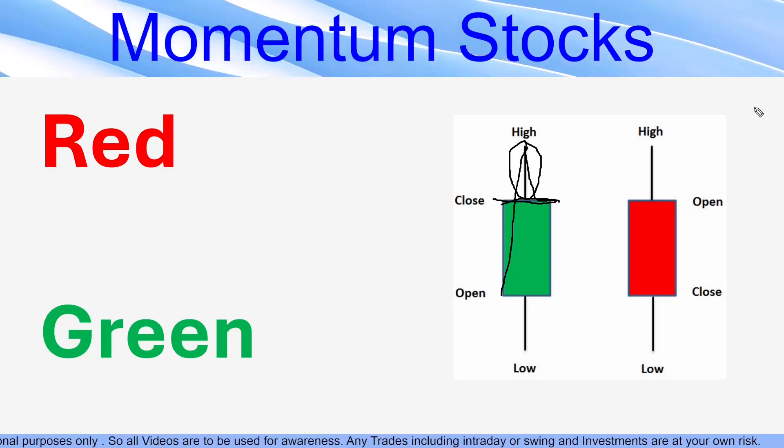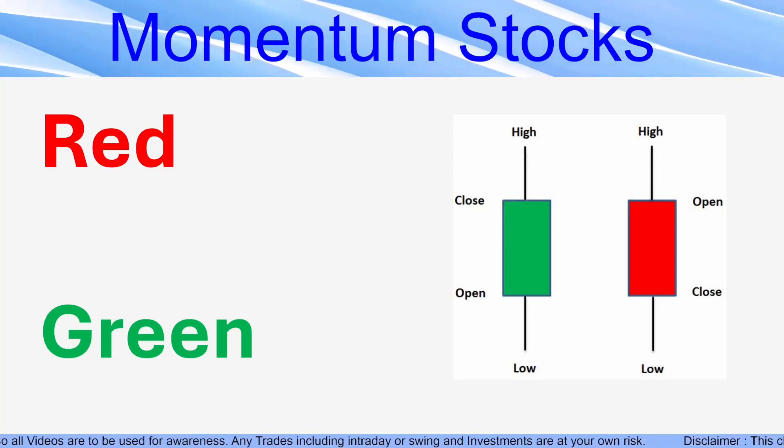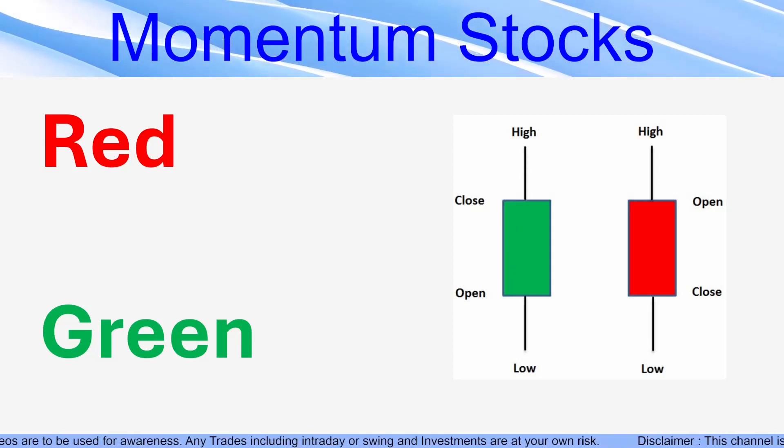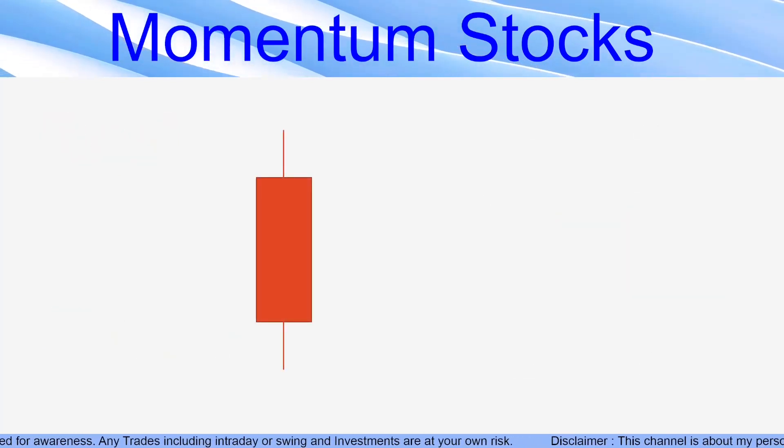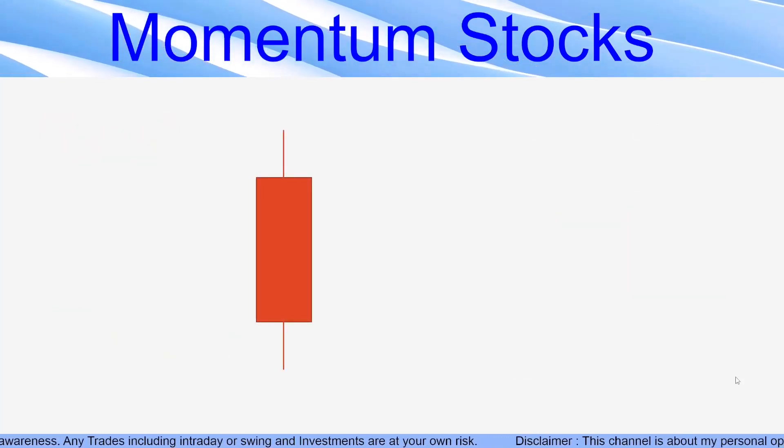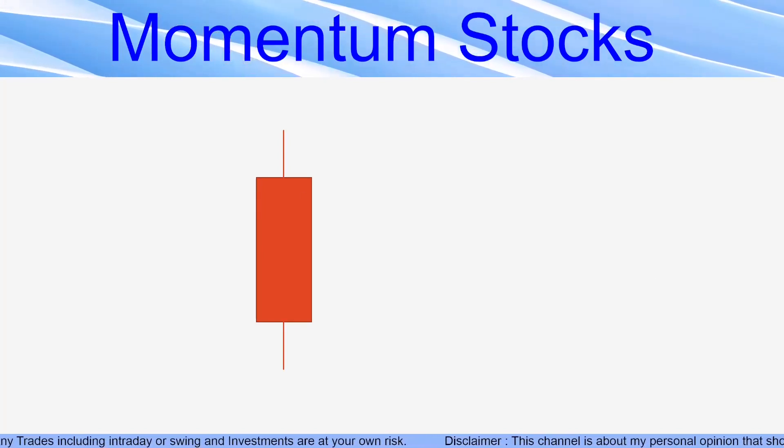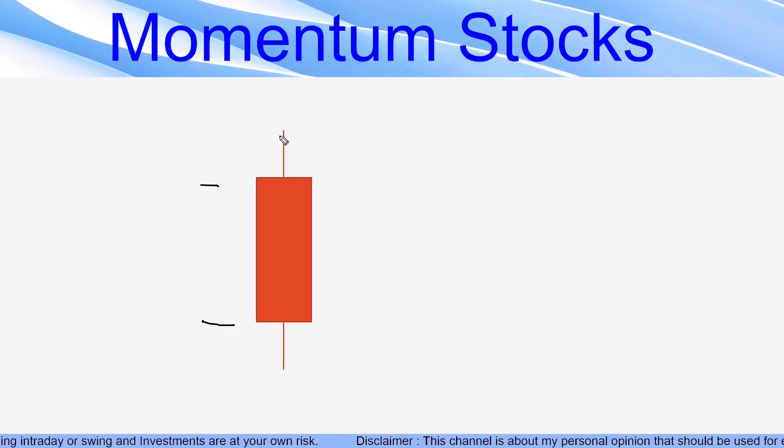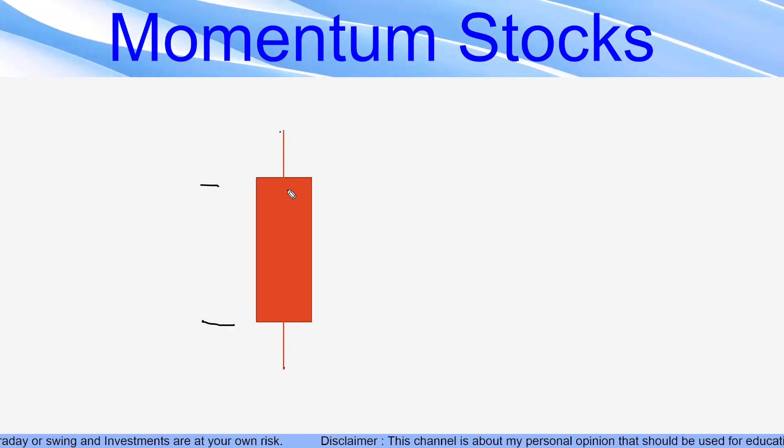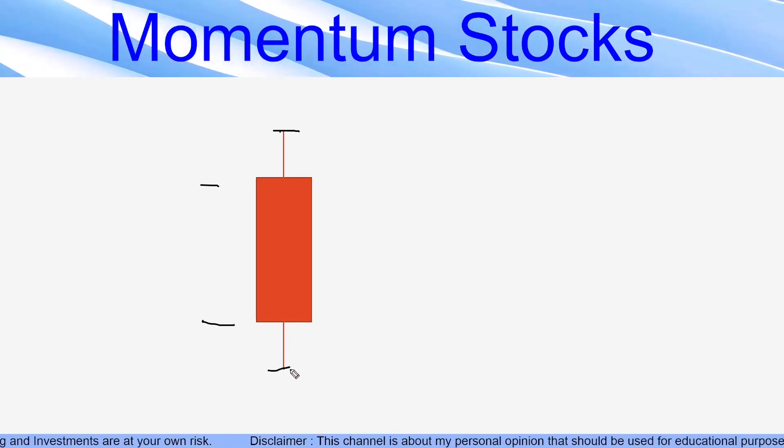Coming to our main topic, that is Doji. Now, to understand Doji, let's take an example of this particular candle. So this is a red candle. So the open is somewhere here. The close is somewhere here. And it has touched this area and this area. This is the high of the candle. This is the low of the interval or candle.